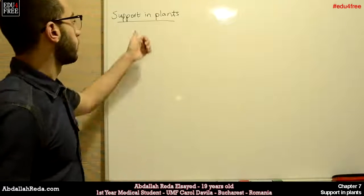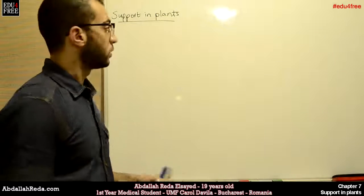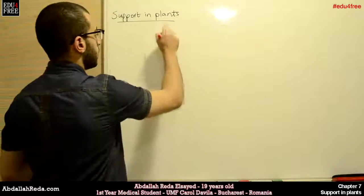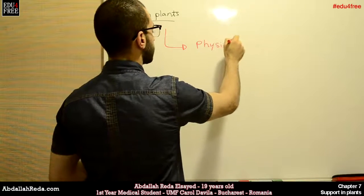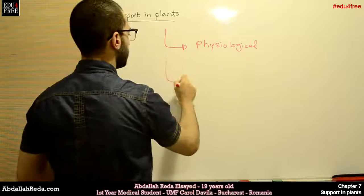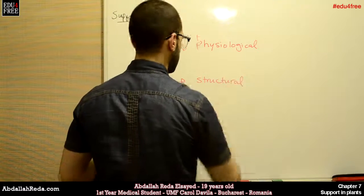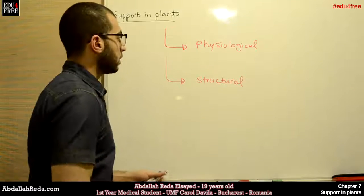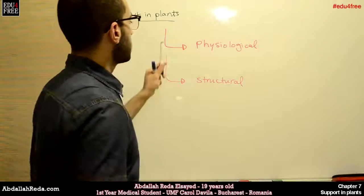This time we're going to talk about support in plants. Support in plants can be classified into two types, or two main categories. We have the physiological support and we have the structural support. Such classification depends on the difference of the types of support in plants.